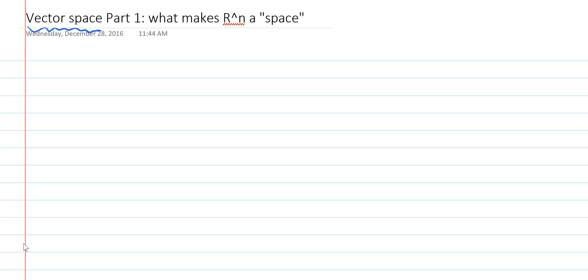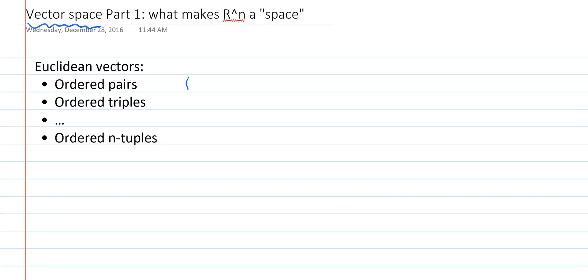In previous videos, we've been talking about vectors that can be represented by ordered n-tuples. We began with ordered pairs, then we extended those to ordered triples.